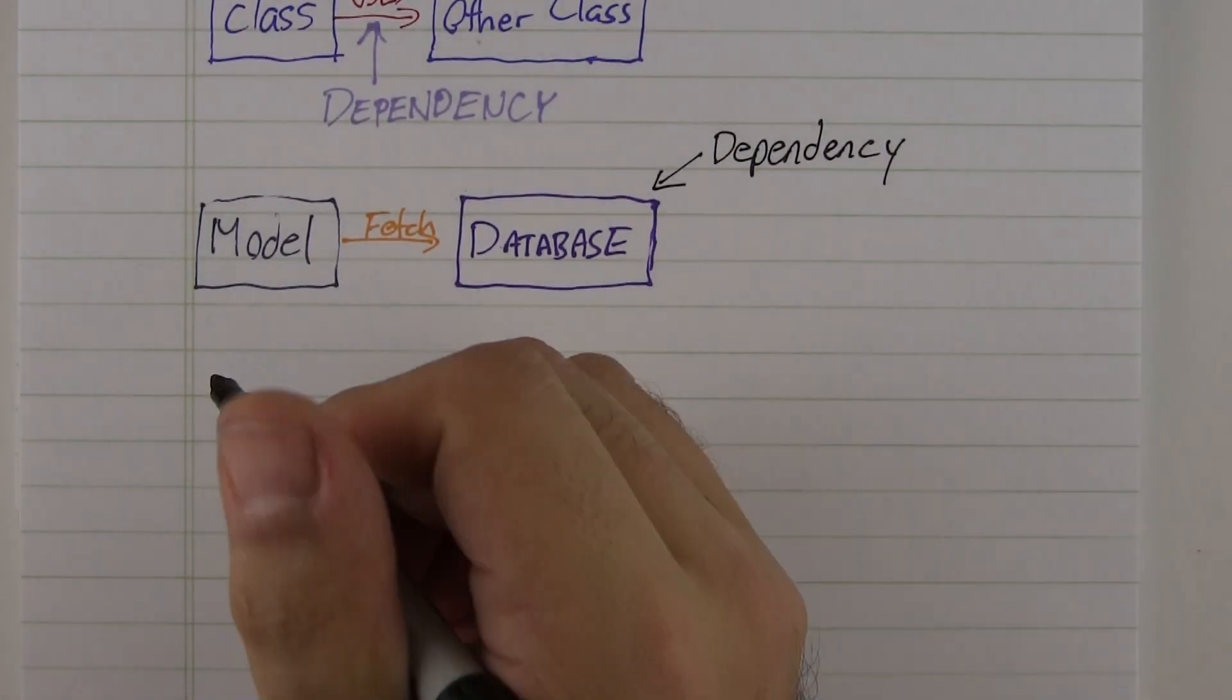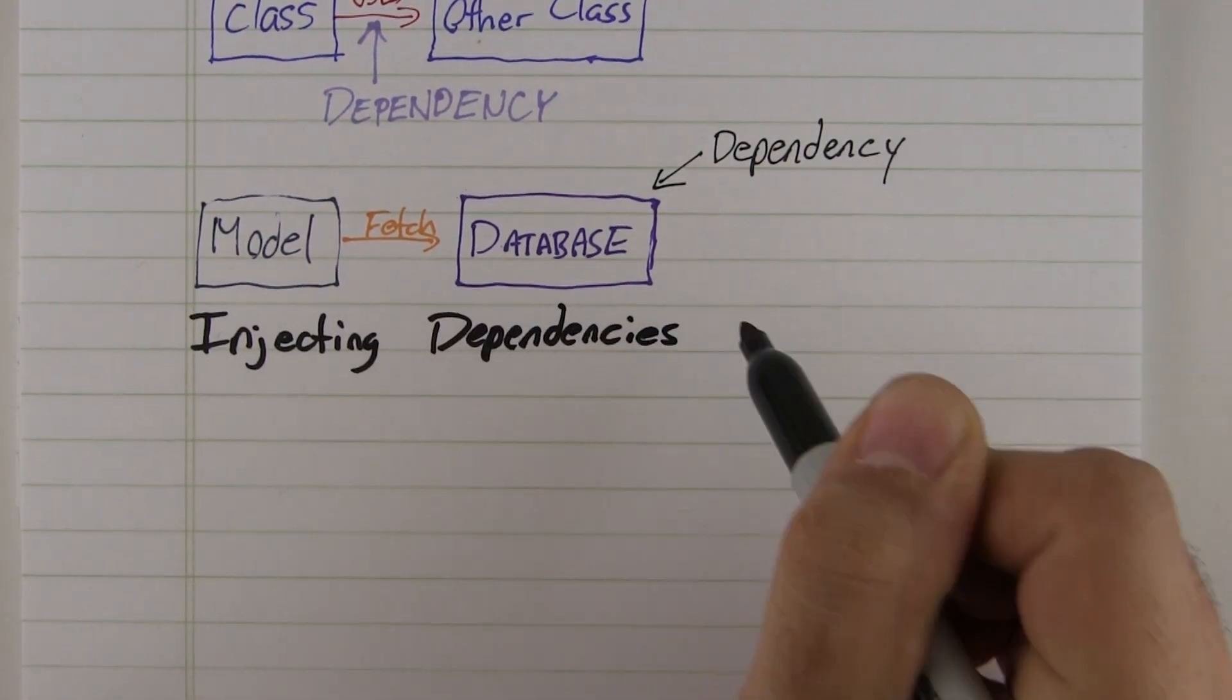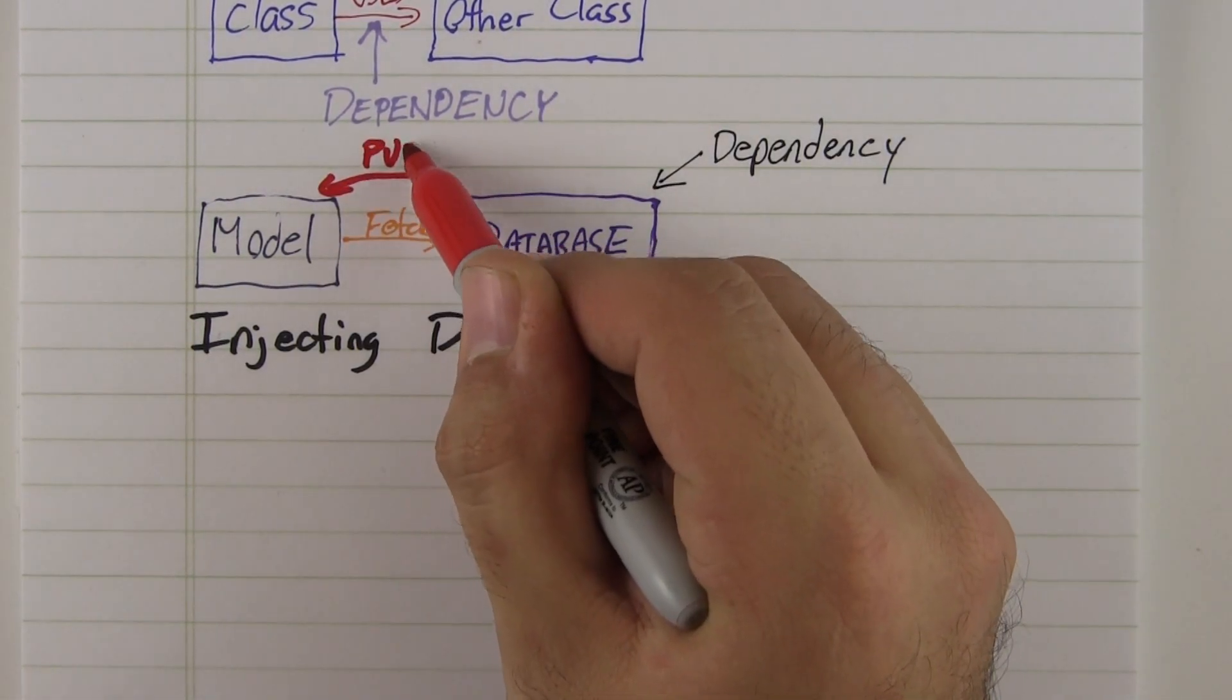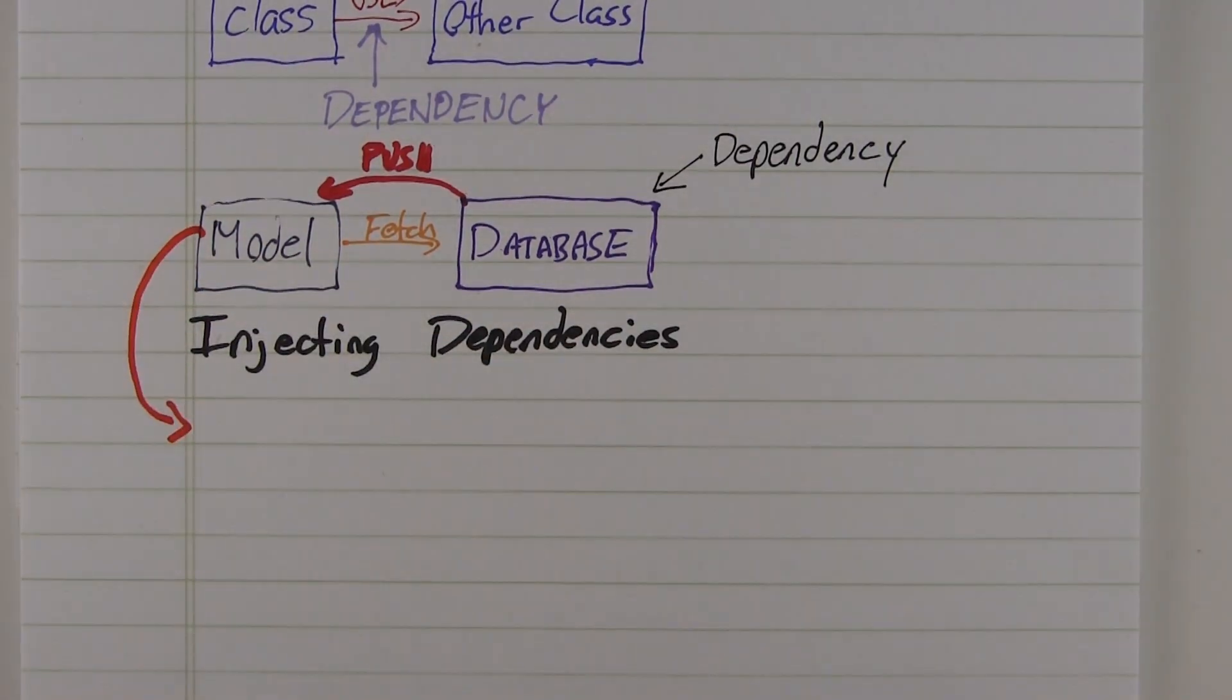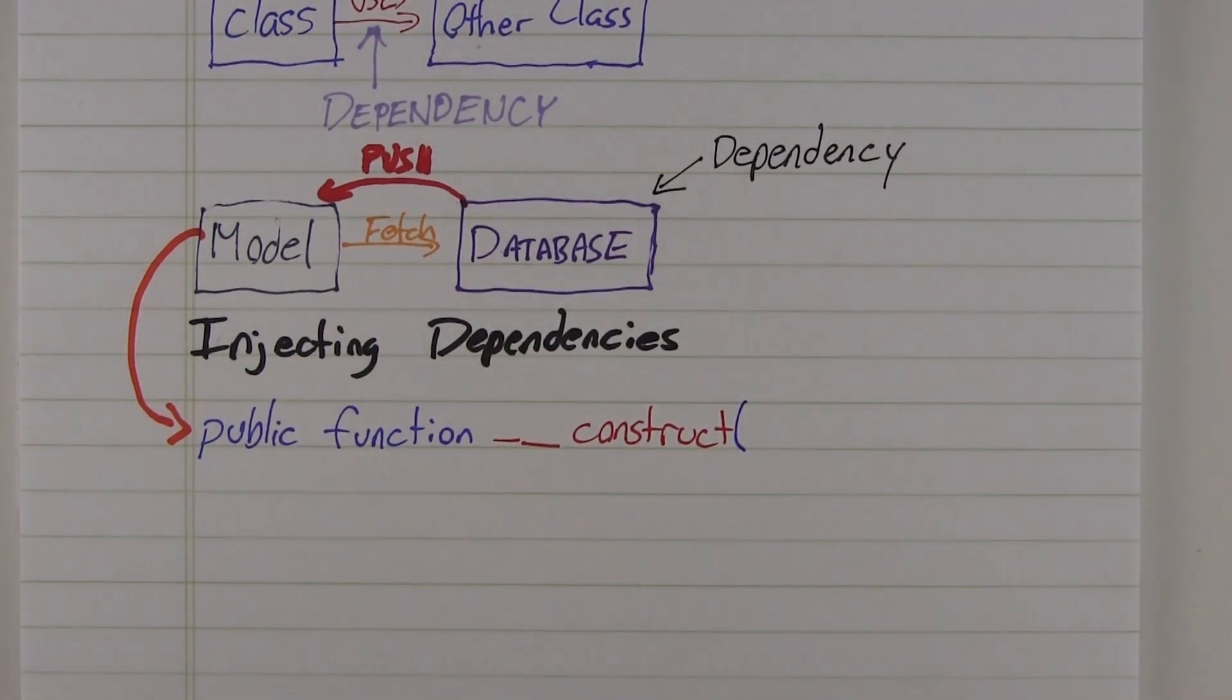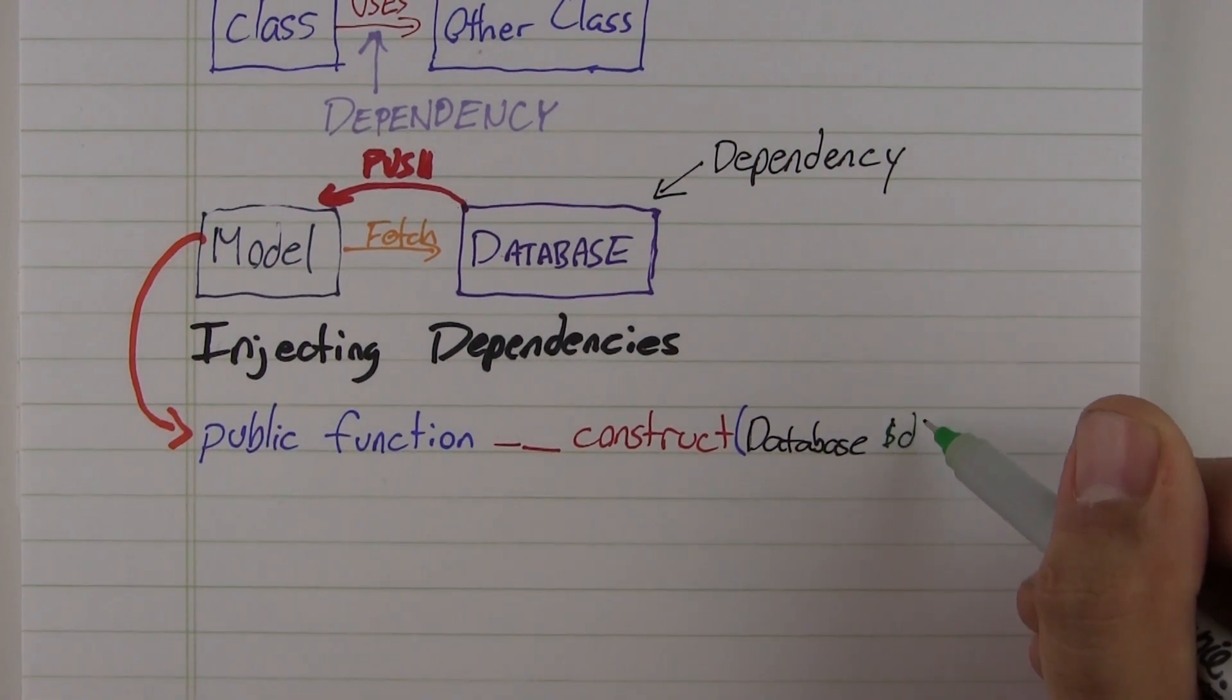So now that we know what a dependency is, let's talk about what it means to inject dependencies. Injecting dependencies just means that the dependency is pushed into the class from the outside. All that means is that you shouldn't instantiate dependencies using the new operator from inside of the class. Instead, take it as a constructor parameter or via a setter.